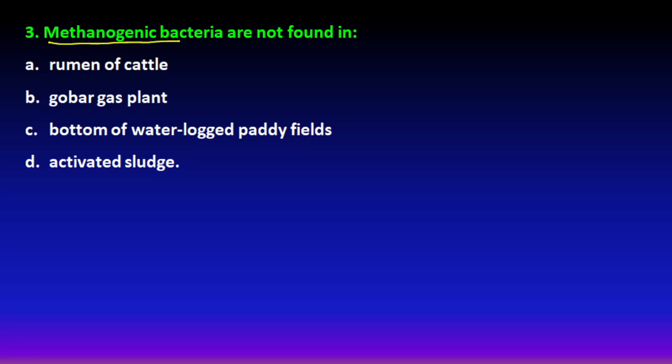Next question: methanogenic bacteria (methane-producing bacteria) are not found where? Methanogenic bacteria are not found in activated sludge. The part of the sludge that goes to sludge digesters or the septic tank contains methanogenic bacteria, which decompose it and produce methane gas. But they are not part of the activated sludge, so option D is the right answer.